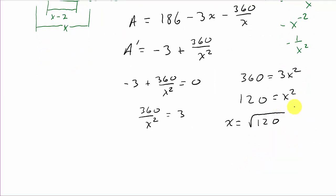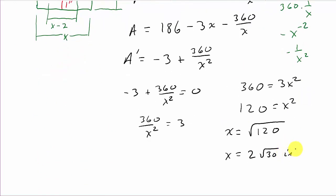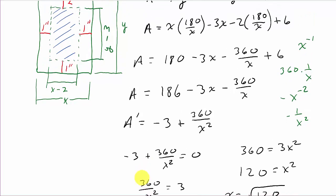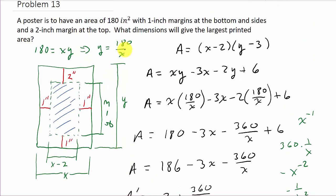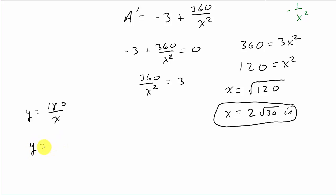Simplifying: 120 equals 4 times 30, so x equals 2 square roots of 30. That's in inches. Now we need to find the y value. Since y equals 180 over x, that's y equals 180 over 2 square root of 30, which gives 90 over square root of 30.